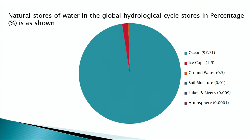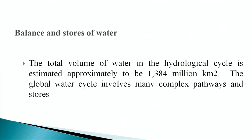The natural stores of water in the global hydrological cycle are distributed as follows: oceans 97.71%, ice caps 1.9%, groundwater 0.5%, soil moisture 0.01%, lakes and rivers 0.009%, and atmosphere 0.0001%. The total volume of water in the hydrological cycle is estimated to be approximately 1.384 million cubic kilometers. The global water cycle involves many complex pathways and stores.